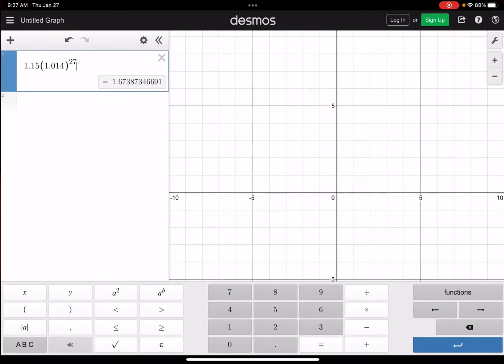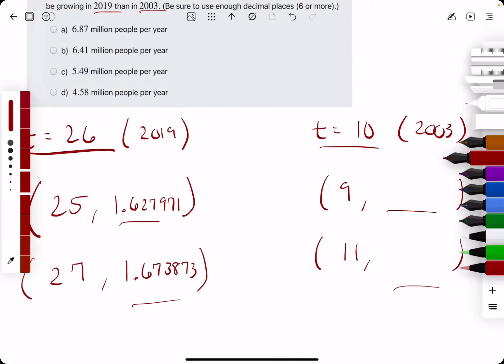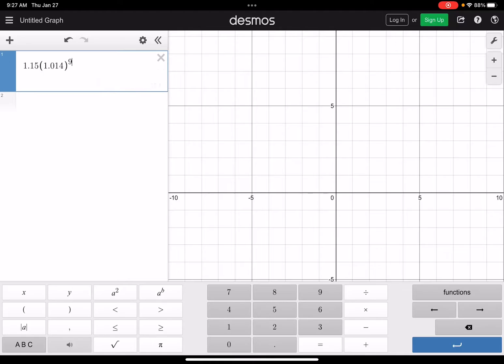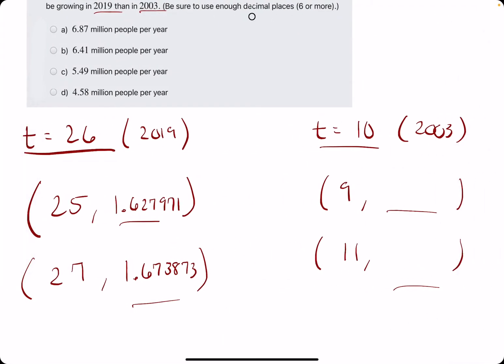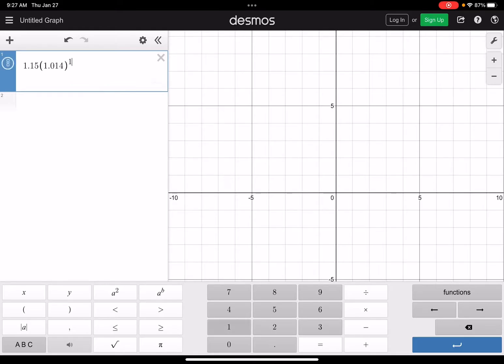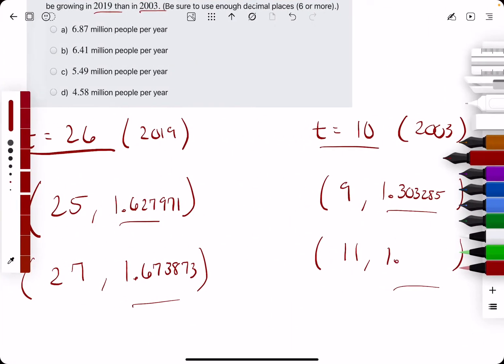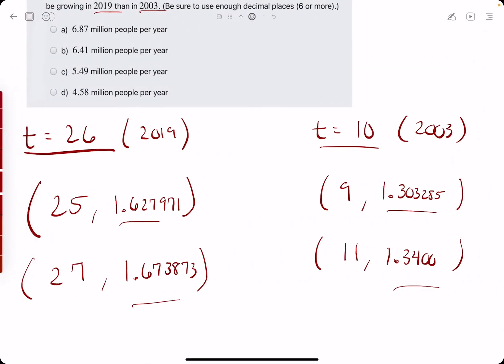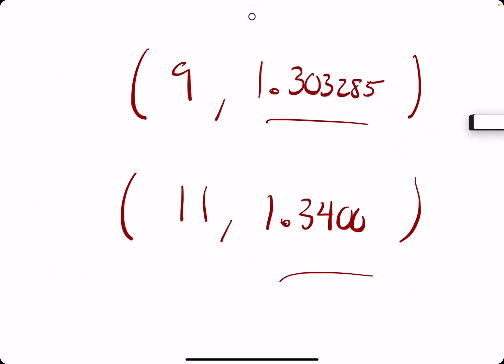All right, just double checking. Now we want to plug in 9 and 11 to t. 1.303285. Now 11 gives 1.3400325.